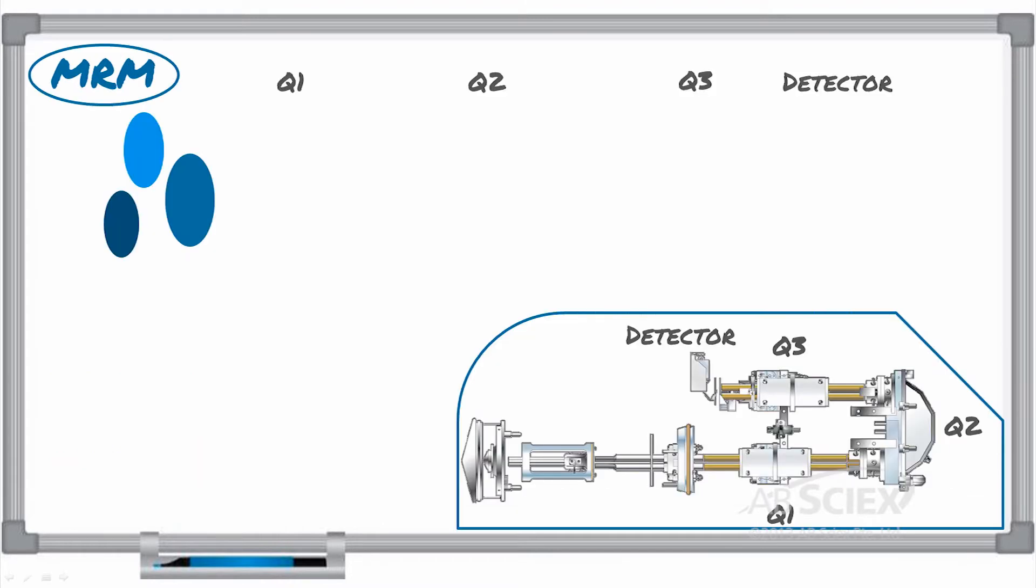A little on the mechanics. In a standard MRM scan, the precursor ion is selected in Q1, fragmented in Q2, and fragment ions are transferred through Q3 and detected. The difference between a QTRAP system and the triple-quad MS-MS system is that Q3 has some additional capabilities.